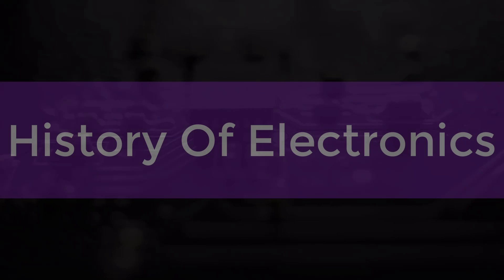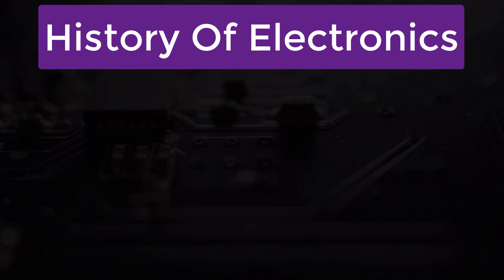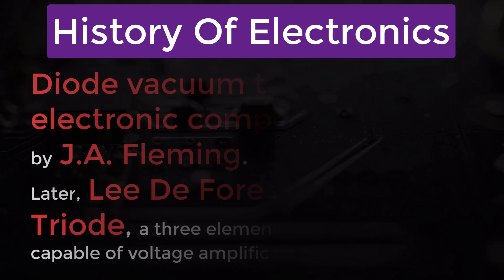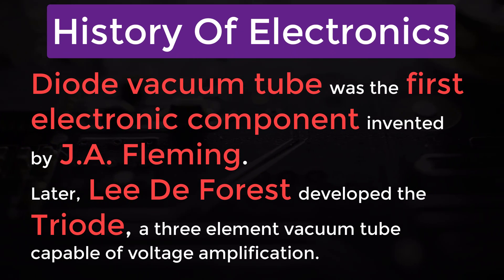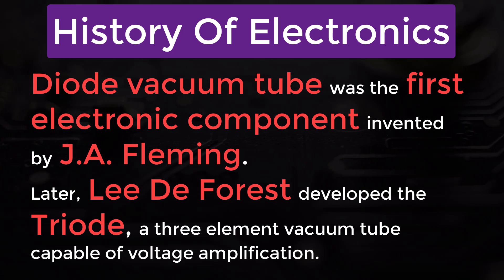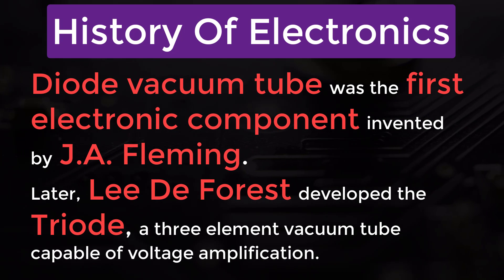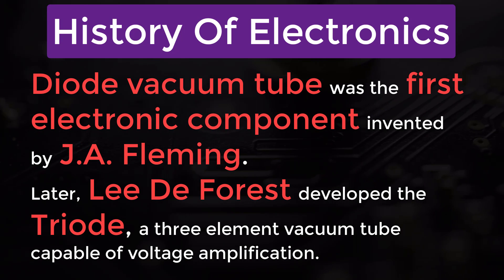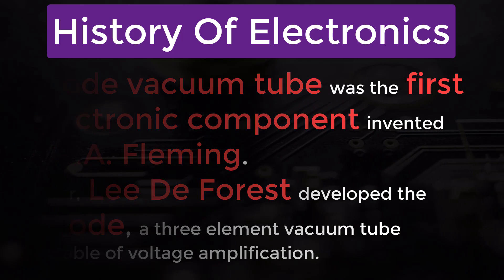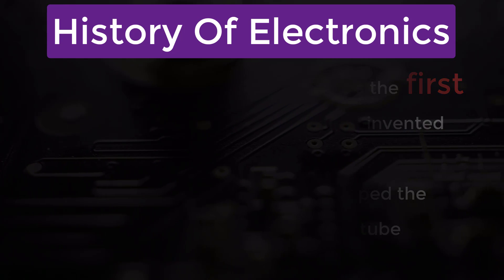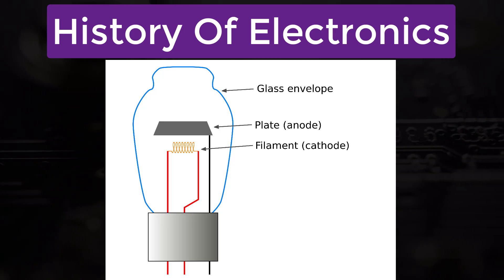Let's look into the history of electronics. The diode vacuum tube was the first electronic component, invented by J.A. Fleming. Later, Lee De Forest developed the triode, a three-element vacuum tube capable of voltage amplification.